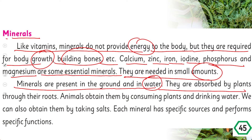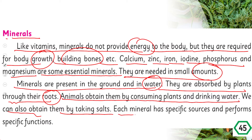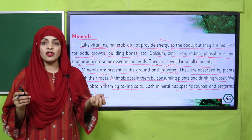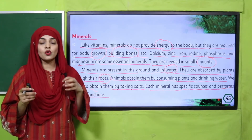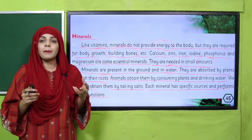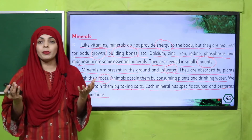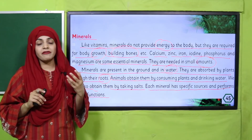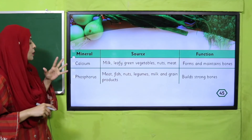Minerals are present in the ground and water. They are absorbed by plants through their roots. Animals obtain them by consuming plants and drinking water. We can also obtain them by taking salts. Each mineral has a specific source and performs a specific function. Minerals present in soil are absorbed by plants, then by animals that eat plants, and then by us when we consume plants, animals, or salts.